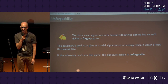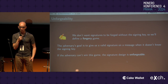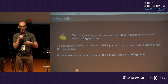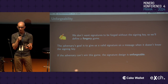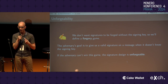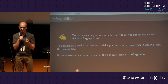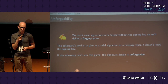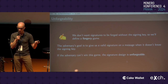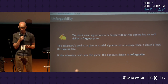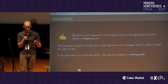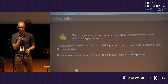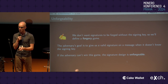So we define a forgery game, played against a hypothetical cryptographic adversary. The adversary's goal is to give us a valid signature on some message when it doesn't know the signing key — it shouldn't be able to do that, it's a forgery. If the adversary can't win the game, the signature design is what's called unforgeable. This is part of our security model, and there are other properties you might want too.